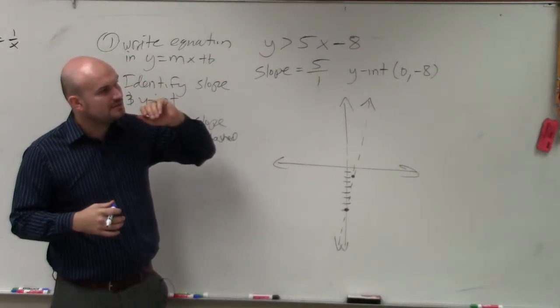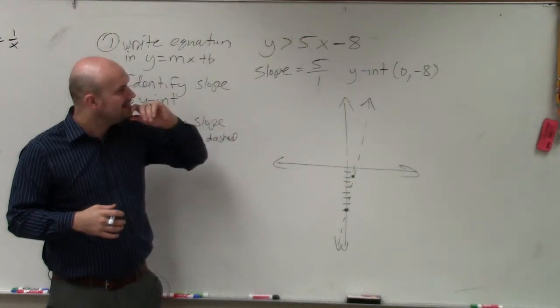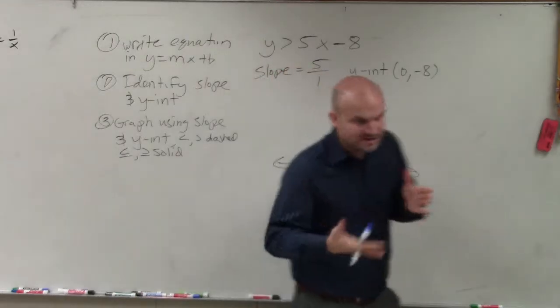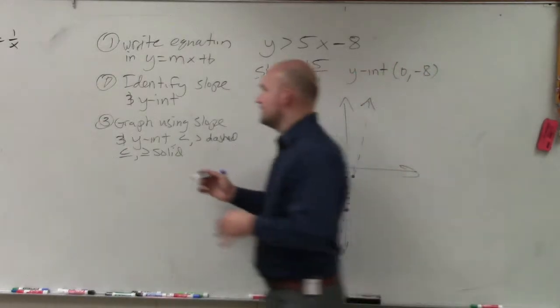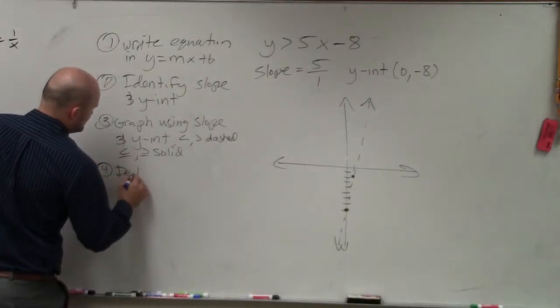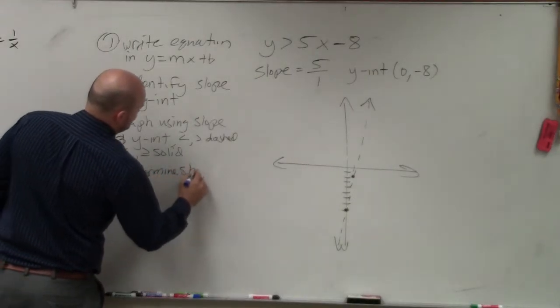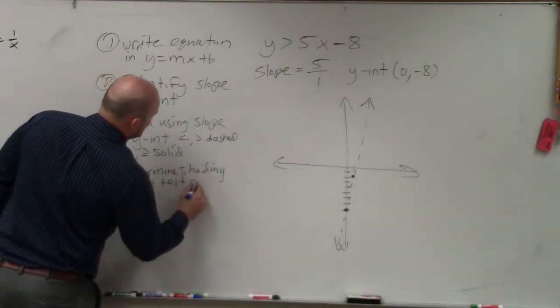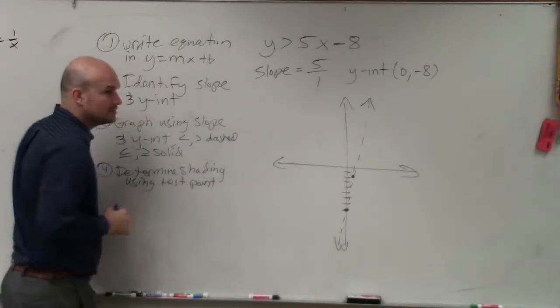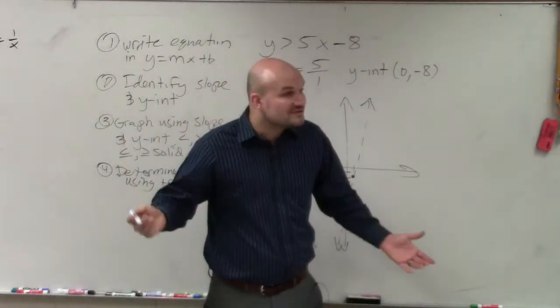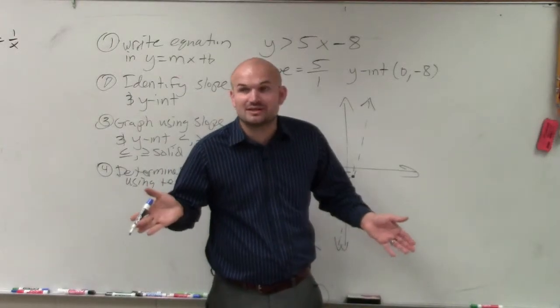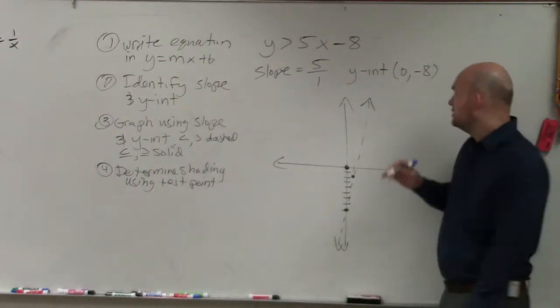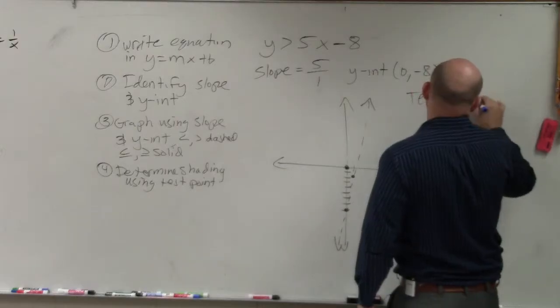Now, the next thing that we need to do is determine the shading because it's not an equation. We're not graphing a line. We need to determine the shading. So my best advice is to determine shading using test points. Does anybody remember what the best test point ever to use was? 0, 0, right? But it's not the best to use when the line goes through 0, 0. Fortunately, in this case, our point does not go through 0, 0. So I'm going to test 0, 0.